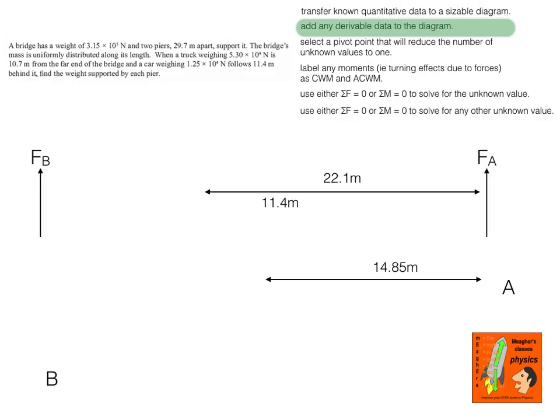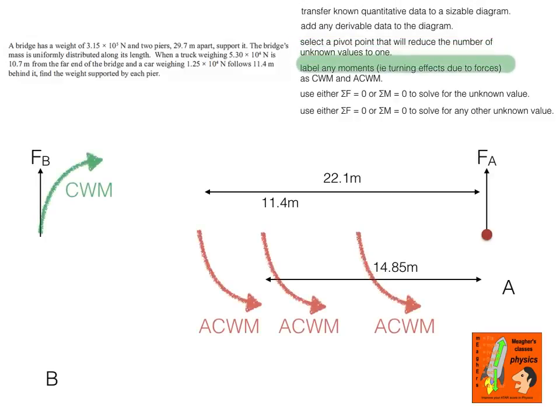I've got two unknown forces — the force at A and the force at B. If I take a pivot point through A, it removes the need to worry about force A because it won't have a turning effect. Now I can look at the turning effects of the weight of the bridge, the car, the truck, and the reaction force at B. There are three anti-clockwise moments balanced by one clockwise moment. For the anti-clockwise moments I know each force magnitude and its distance from the pivot; for the clockwise moment I know the distance but not the force magnitude, so there's only one unknown — I can solve for force B. Once I've got force B, the sum of the forces down equals the sum of the forces up, making it very straightforward to determine the reaction force at A.